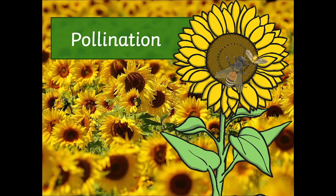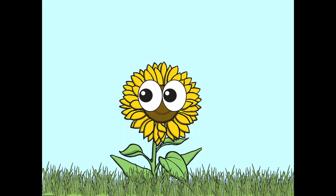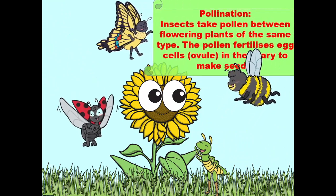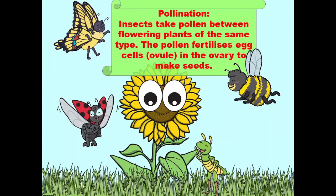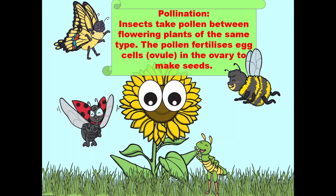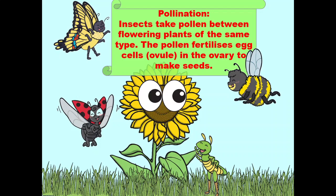Pollination! Insects take pollen between flowering plants of the same type. The pollen fertilizes egg cells in the ovary to make seeds.